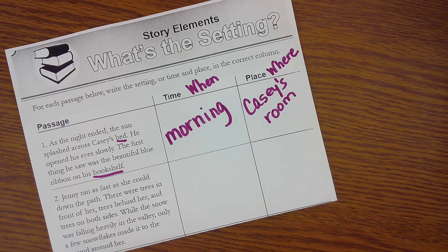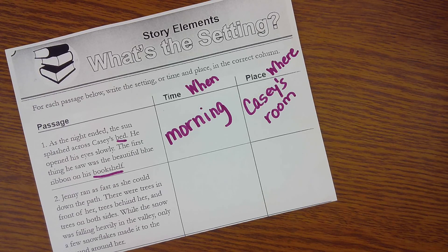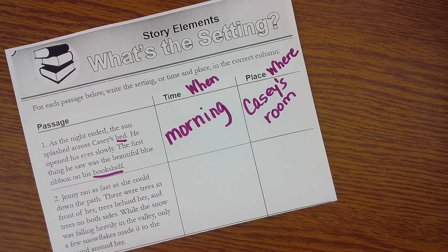In our little passage here, the main character is Casey. He is the only character in this little story. We were focusing more on the setting, but my thinking voice was in action. As I was reading this, I am very curious as a reader about what that blue ribbon is about. That's something I'm wondering after I read this.